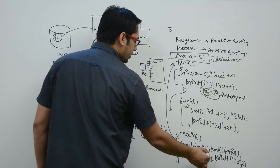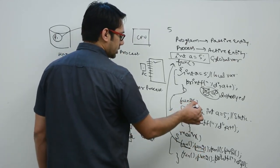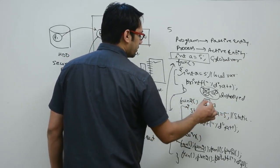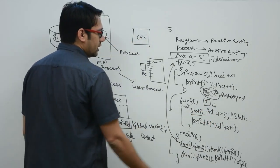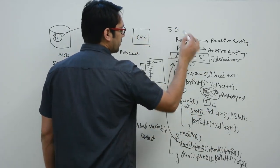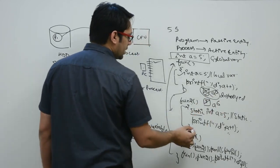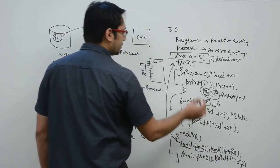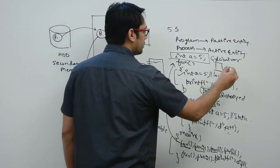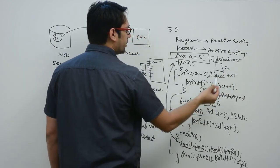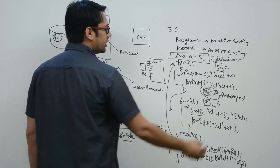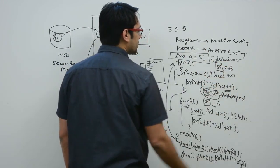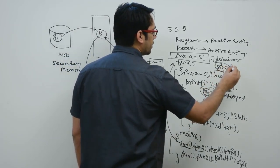When fun2 is called, since `a` is a static variable, it is not destroyed. It stores 5, prints 5, and increments to 6. After the function ends, the static variable is not destroyed. When fun1 is called again, memory is allocated to `a` again, it stores 5, prints 5, increments to 6, and is destroyed again when the function ends.